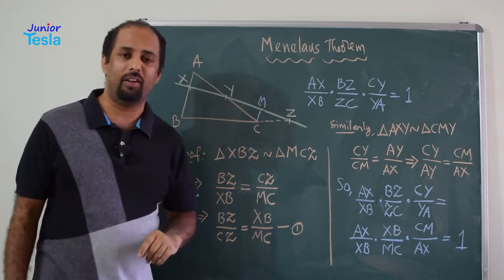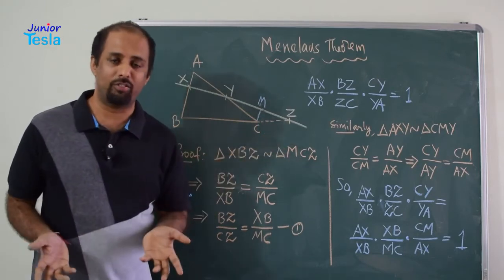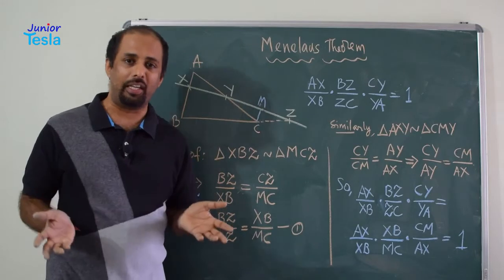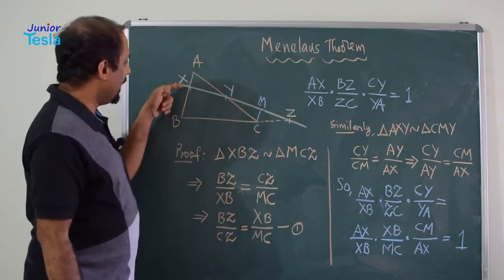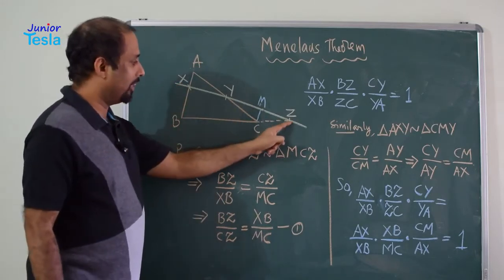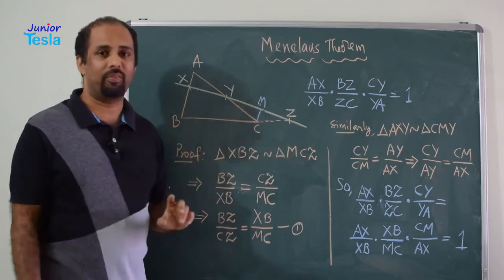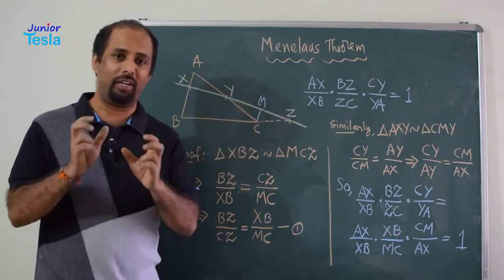Angle B and angle C are equal and this angle is third angle is common. So, all the three angles are correspondingly equal. Therefore, we can say XBZ is similar to MCZ. So, we got one pair of similar triangles.